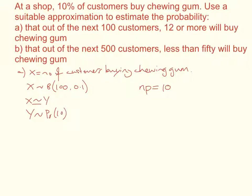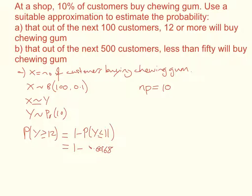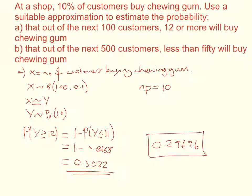We're asked to find the probability that 12 or more customers will buy chewing gum, so we find the probability that Y is greater than or equal to 12. That equals 1 minus the probability that Y is less than or equal to 11, which reading from the tables is 1 minus 0.6968, giving a final probability of 0.3032. The actual probability from a graphical calculator was 0.29696, which is pretty close to our approximation.